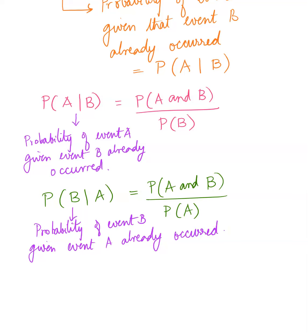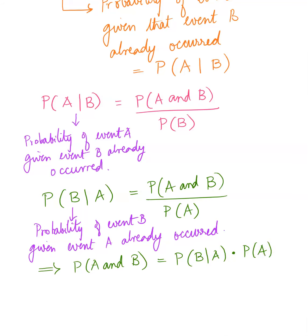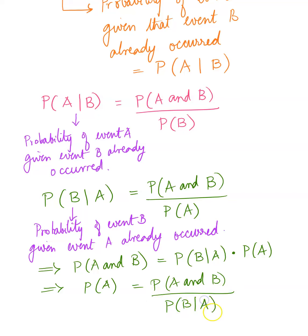If you're given P(B|A) and P(A), you can find P(A and B) by rearranging: P(A and B) = P(B|A) times P(A). Likewise, you could find P(A) as P(A and B) divided by P(B|A). These are just mathematical rearrangements of the same formula.